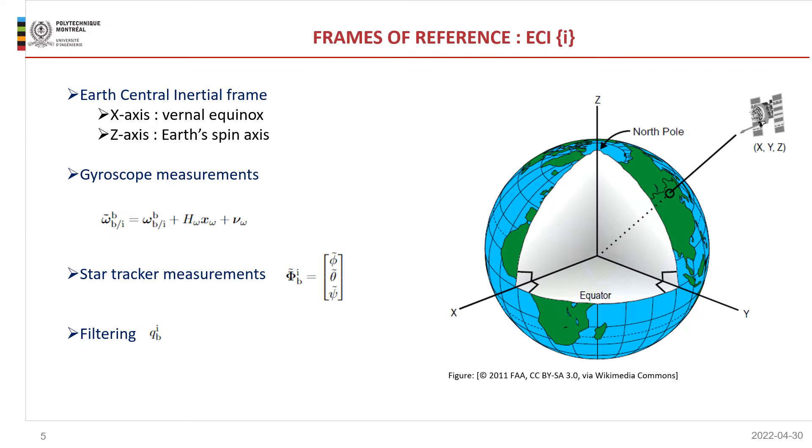At this point in the term, we hope you're familiar with the ECI frame of reference. We still need to discuss it a little bit because it's really important in our project. For celestial applications, the star tracker measurements are reported with respect to the ECI frame and the gyroscope measurements are made with respect to the ECI frame as well. So that's very convenient for us because we're going to do all our filtering and obtain the attitude quaternion in the ECI frame.